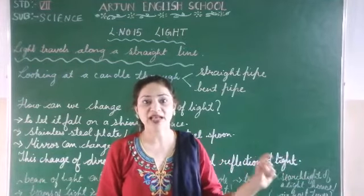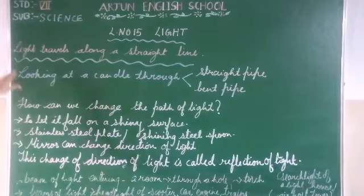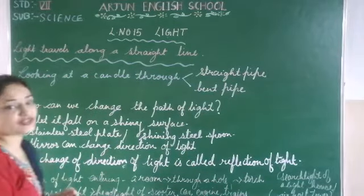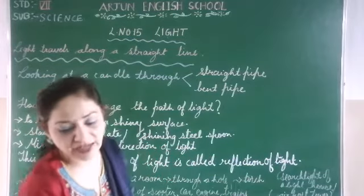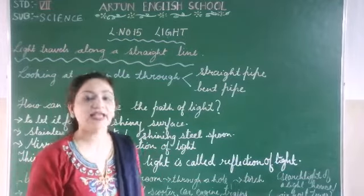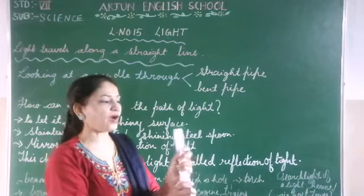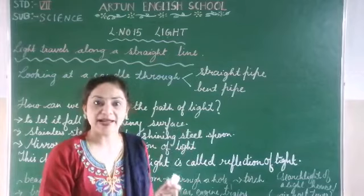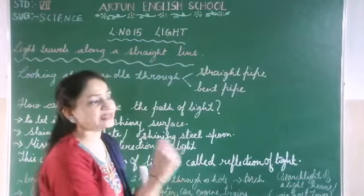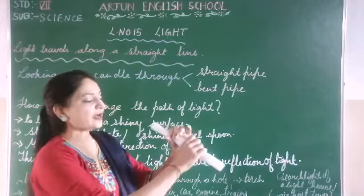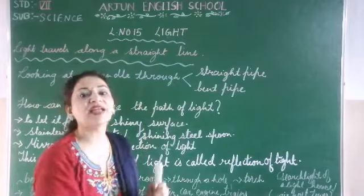So we can get knowledge about light. Now, light travels in a straight line. Let's look at a simple example. We can use a candle, and we can see that candle like this. If we look at it straight, we can easily see it.